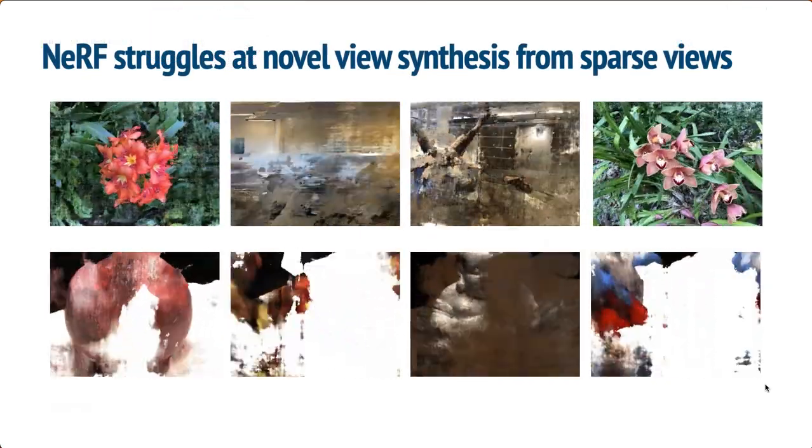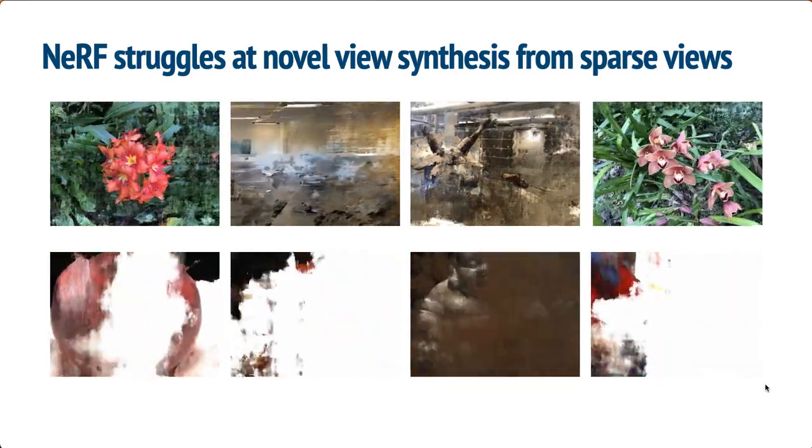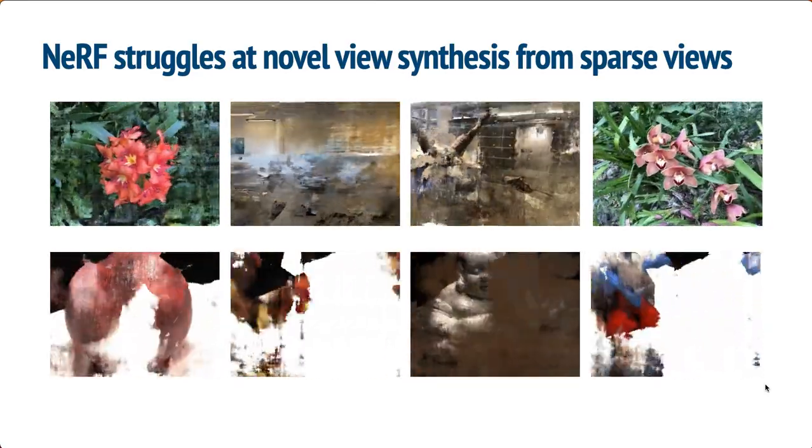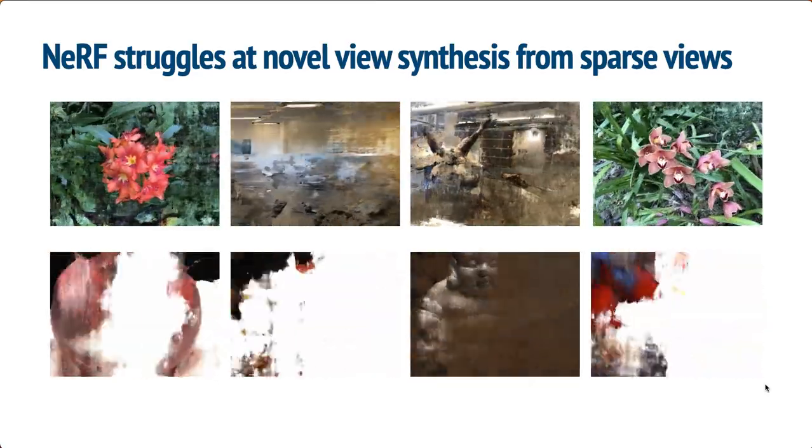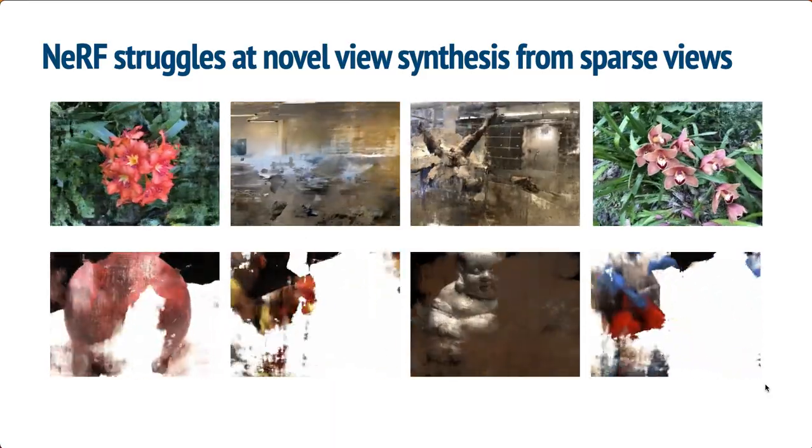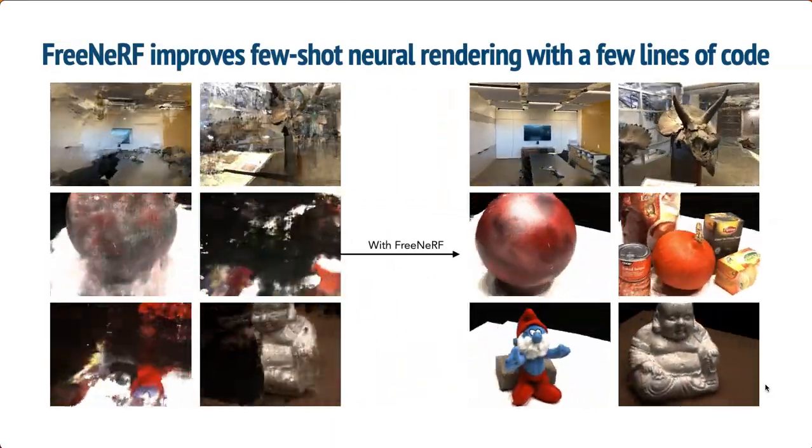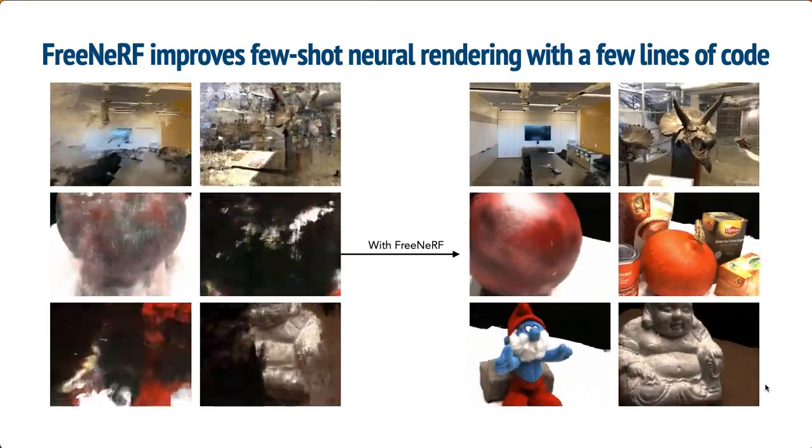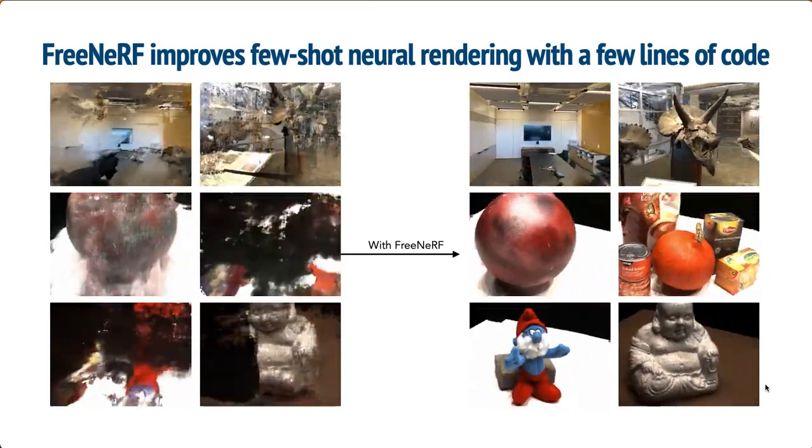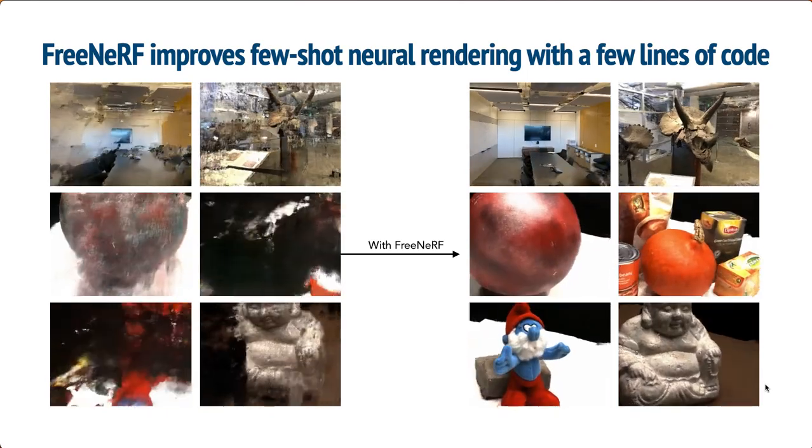Neural radiance fields, or NeRFs, typically struggle to reconstruct 3D scenes under the few-shot scenario, as you can see from the video here. In contrast, our FreeNeRF enhances few-shot neural rendering with simple techniques that can be implemented in just a few lines of code.